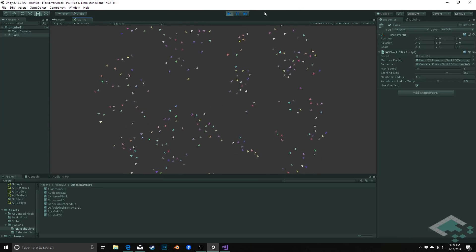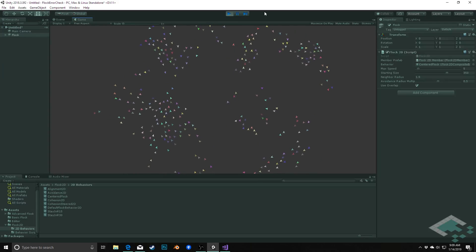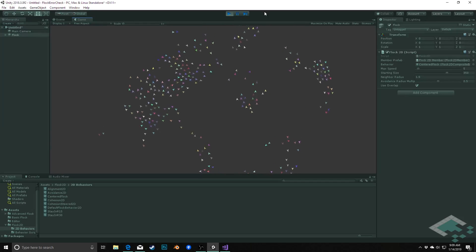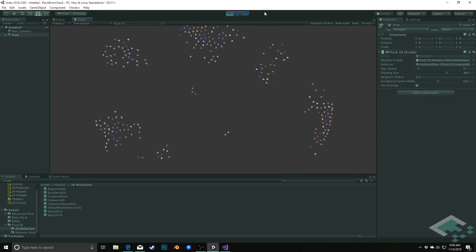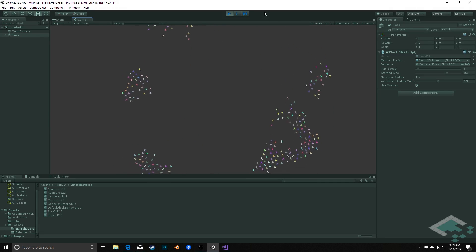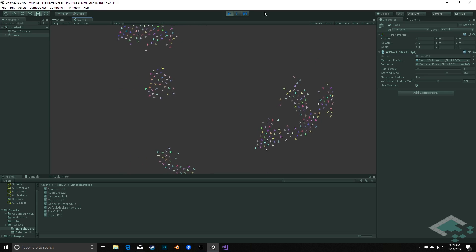An interesting side effect of the flocking algorithm is that the behavior of the flock can seem random or unpredictable as a whole, when in fact every movement decision is completely calculated and predictable, but there are simply too many decisions being made each frame for a person to predict the overall motion of the flock.